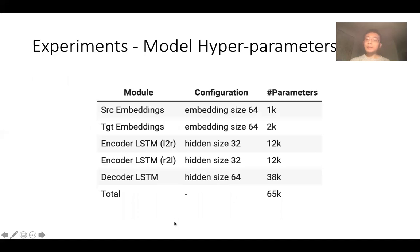Here is the configuration of the model I'm using. The model has 65,000 parameters in total, which is actually way below the capacity of the Nano 33 BLE chip we have.